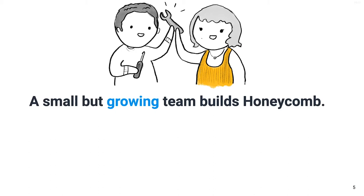Sailors used to beg me not to tell anyone how few engineers we had, whereas I always wanted to shout it from the rooftops — can you believe the ship that we have built and how quickly we could move? I used to love it when people would be like, 'Oh my God, I thought you had 50 engineers,' because we only had like 12.